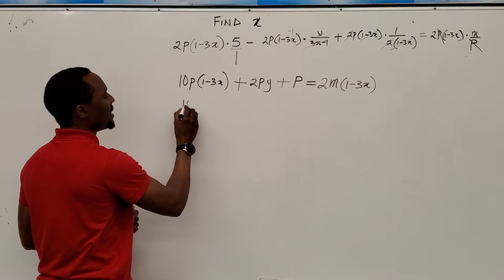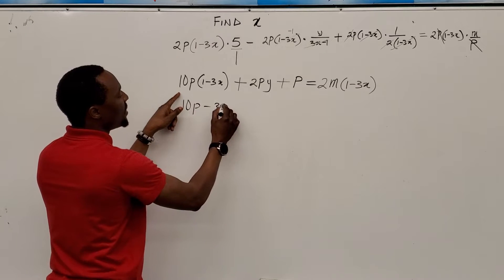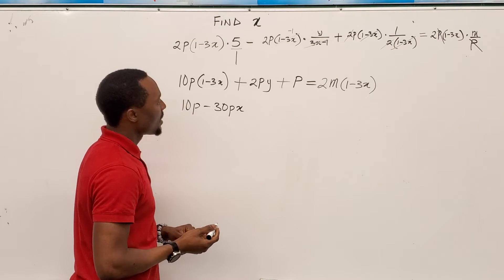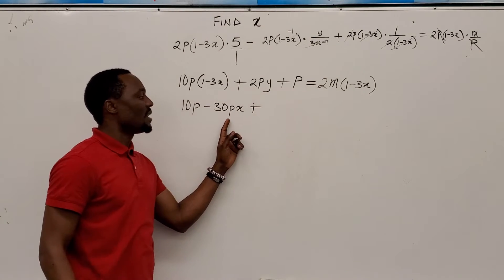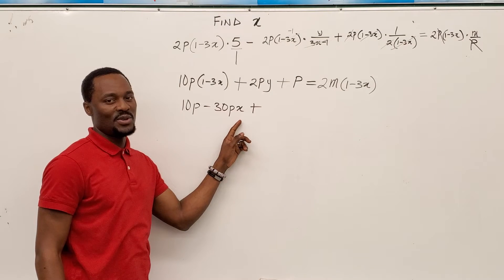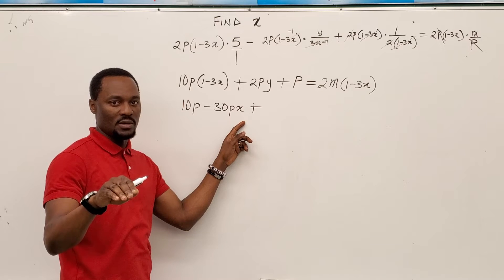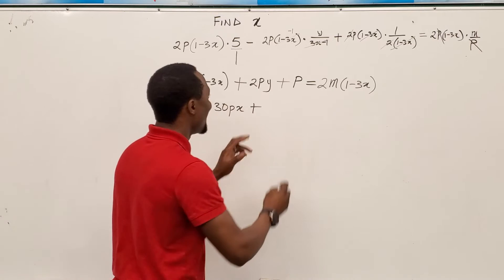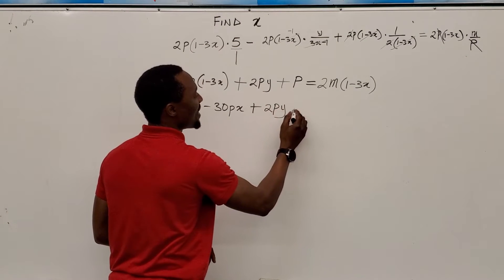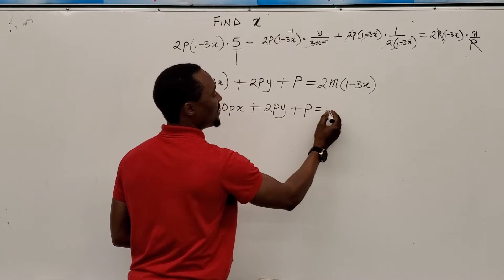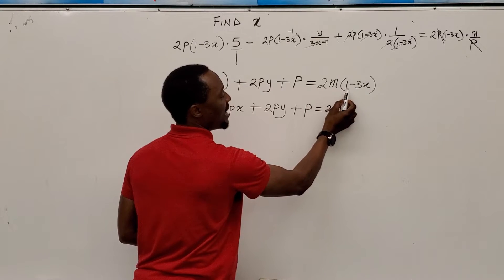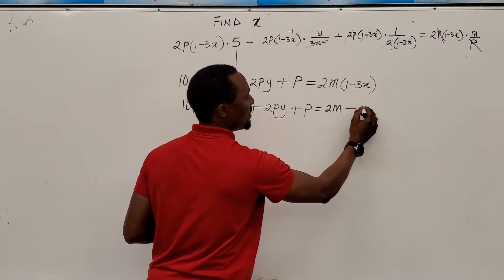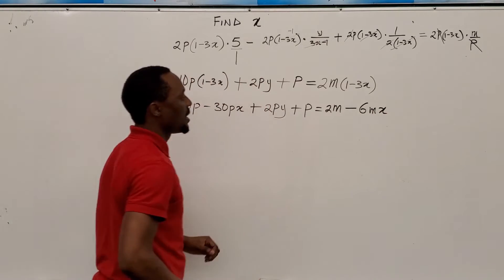So you multiply this out. You have 10p minus, this is going to be 30px. This is going to be, you notice how I did not say 30xp. It sounds better if you say 30xp. But you have to follow the alphabetical order. P comes before x, if I'm correct. I think I'm correct. Let's go on. This is going to be 2py. And this is going to be plus p equals, you break this open. It's going to be 2m. That's 2m times 1 when you distribute. And this is going to be 2m times 3x is going to give you 6mx.